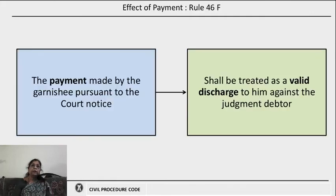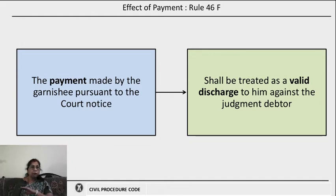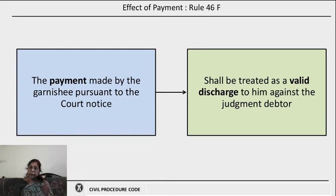What is the effect of payment? Rule 46F says that after the court notice, if the garnishee makes payment to the court, that payment itself will be treated as a valid discharge to him as against the judgment debtor. He need not pay the judgment debtor, though he was actually indebted to the judgment debtor — paying to the court itself discharges him from his liability.